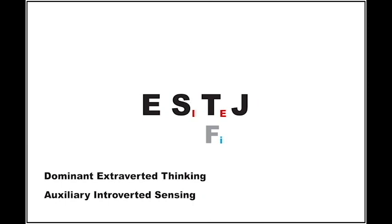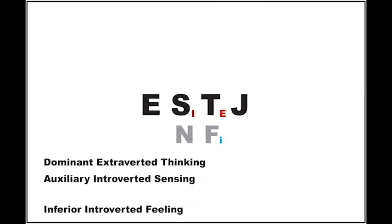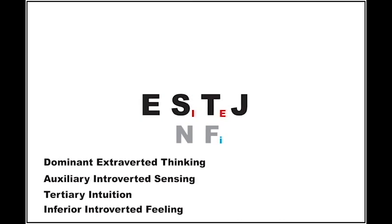Step 5: finally, the tertiary function is always the opposite of the auxiliary function. In this case, the opposite of sensing is intuition. So now we have deduced that an ESTJ is an extroverted dominant thinking type, with auxiliary introverted sensing, tertiary intuition, and inferior introverted feeling.